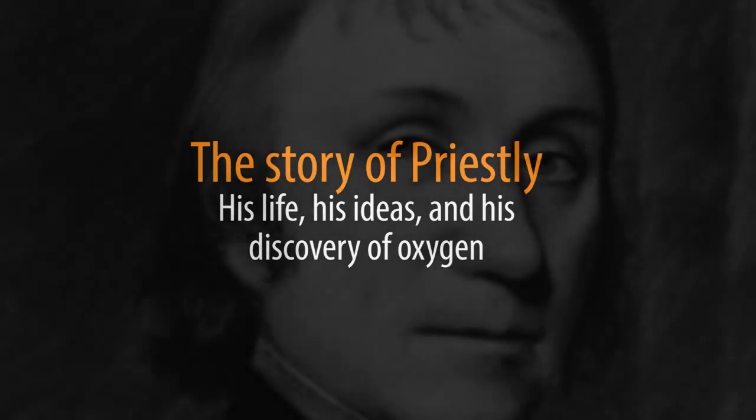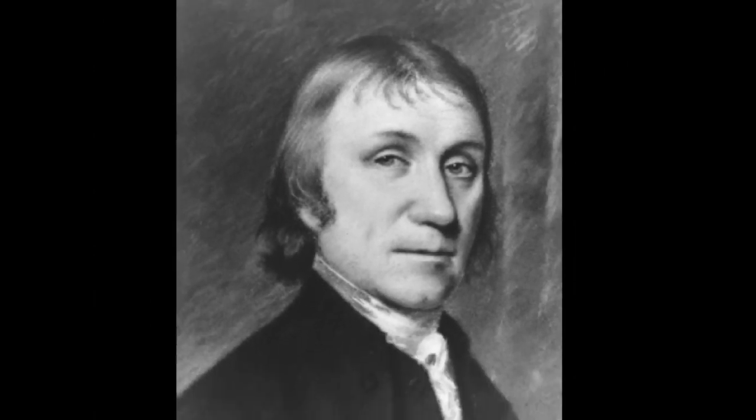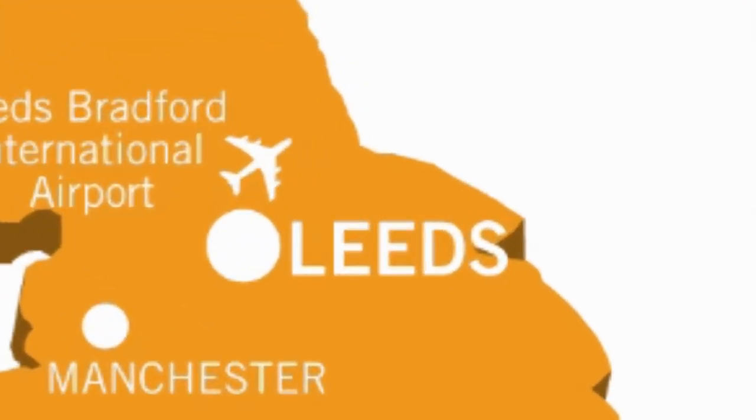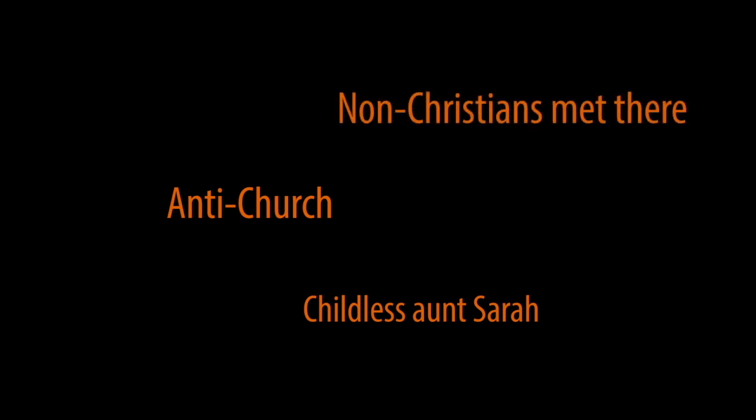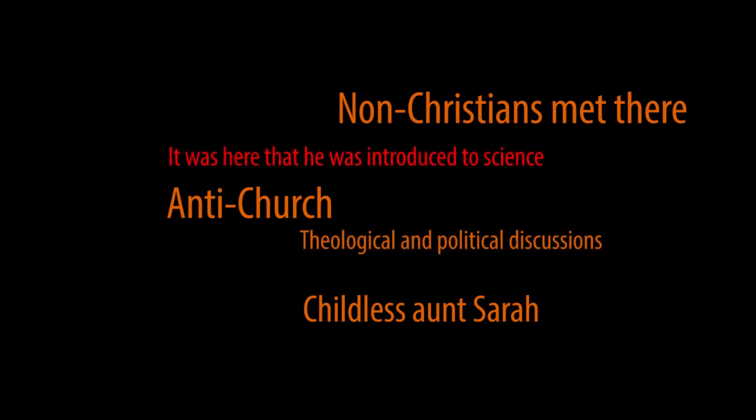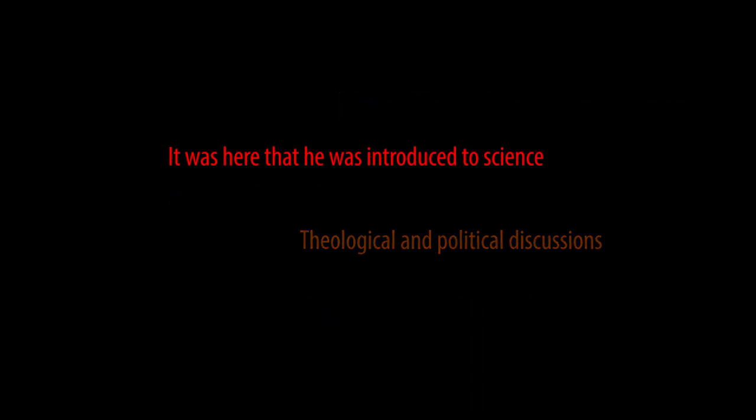In 1733 a young man called Joseph Priestley was born. He was the eldest child of six, born to a poor family near Leeds. When he was very young he was sent to live with his aunt Sarah. This was important as their beliefs were not that of the church, and many non-Christian people met there and had theological and political discussions. It was here that he was introduced to science. He went to a well-established grammar school at the age of 12 and learned mathematics, science, and many languages. He grew up to become a prosperous chemist.